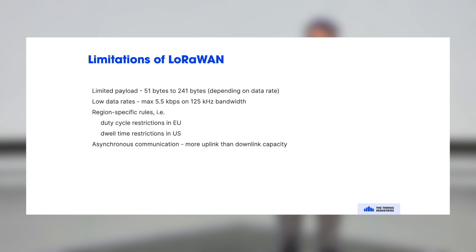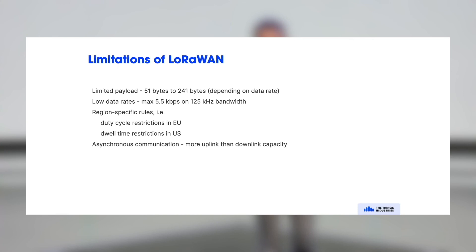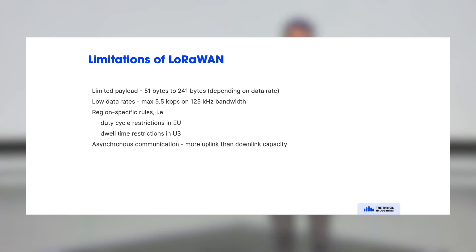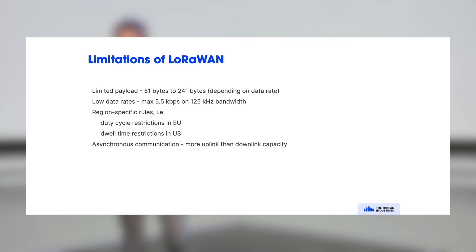Another limitation is data rate — transmission is quite slow, up to 5.5 kilobits per second. There are different rules in different regions that can also be a limiting factor. In the EU there's a duty cycle, in the US there are dwell time restrictions, and the certification program is different for these regions.